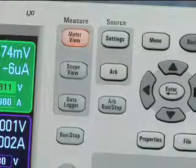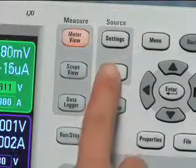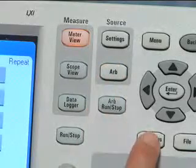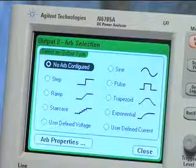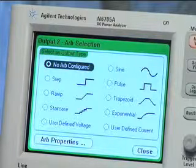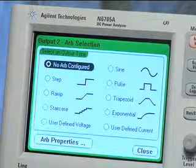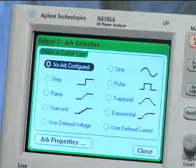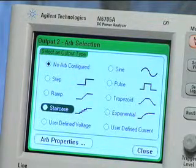Let's see how easy it is to set up the DC Power Analyzer to generate this waveform. The arbitrary waveform generator function will be used to create this waveform. The N6705A has several built-in waveforms, including sine, step, ramp, and pulse. But for this application, the user-defined voltage waveform is selected.